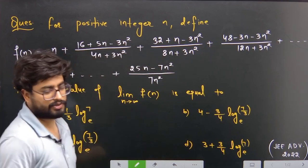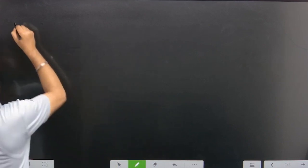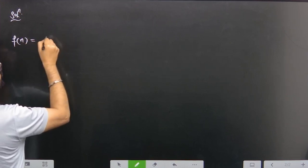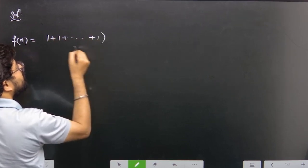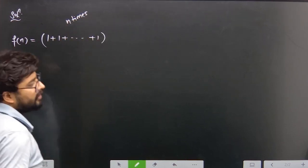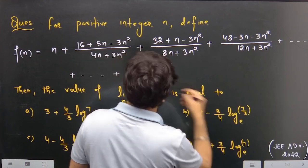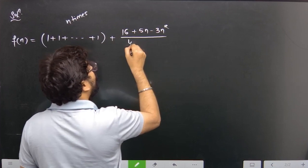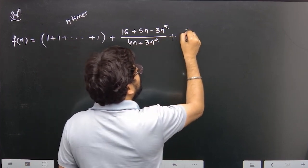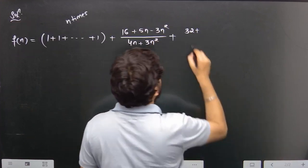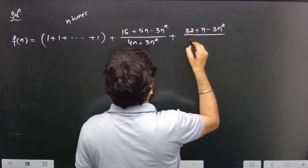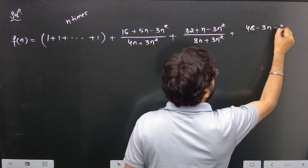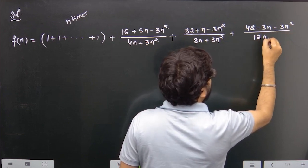Looking at the solution: f(n) is equal to n times (1+1+1+... n times), plus the next term which is (16 + 5n - 3n²) divided by (4n + 3n²), plus (32 + n - 3n²) divided by (8n + 3n²), plus (48 - 3n - 3n²) divided by (12n + 3n²).